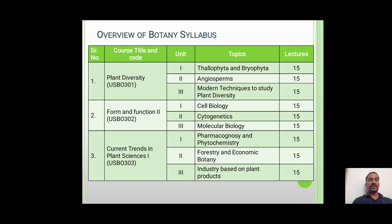Paper number 3, Current Trends in Plant Sciences, also carries three units. The first unit is from Pharmacognosy and Phytochemistry, the second unit is Forestry and Economic Botany, and the third unit is Industry Based on Plant Products. Every unit is of 15 lectures.